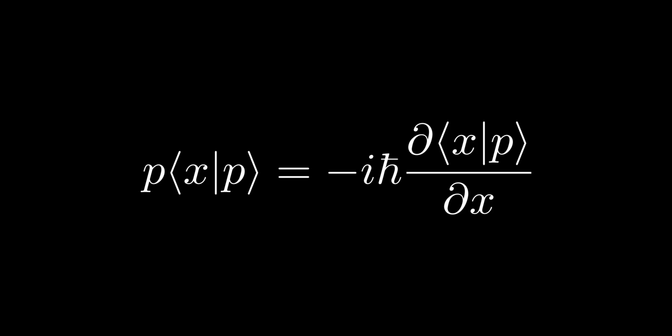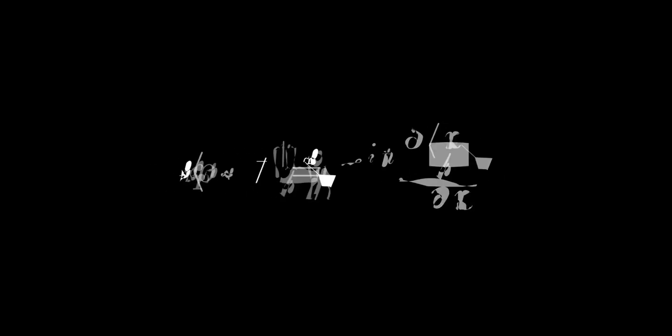We see bra x ket p as a function of the left argument of the inner product. The differential equation is then solved by separation of variables. Taking the complex conjugates of both sides yields another useful equation.